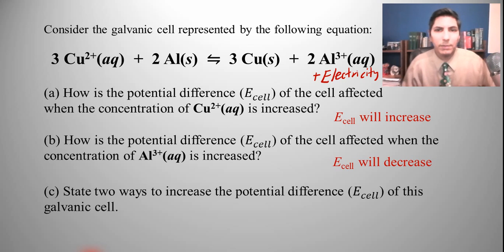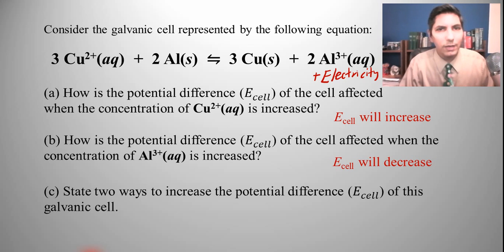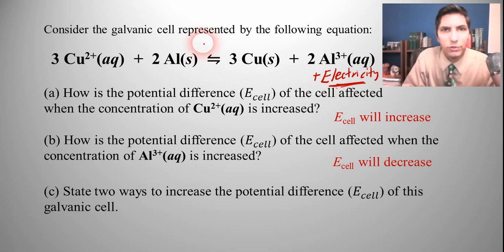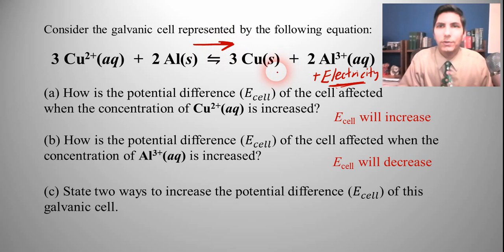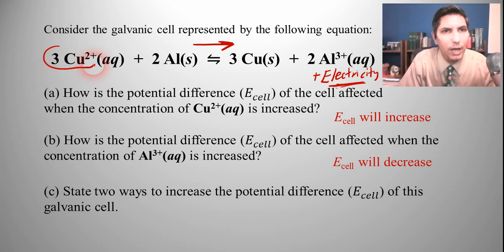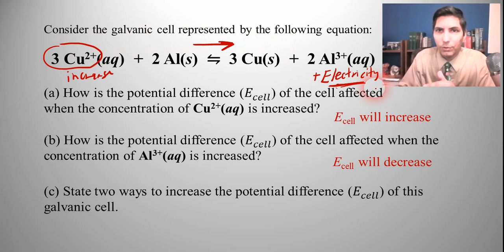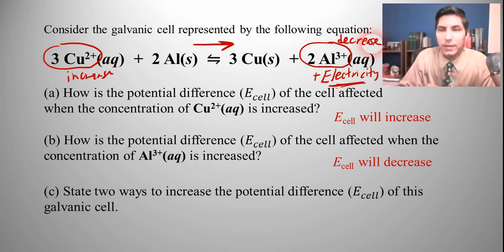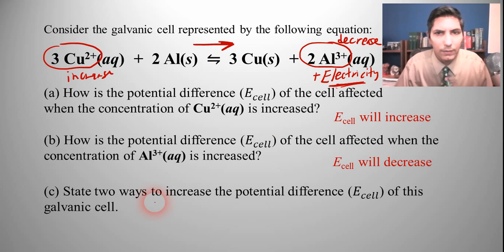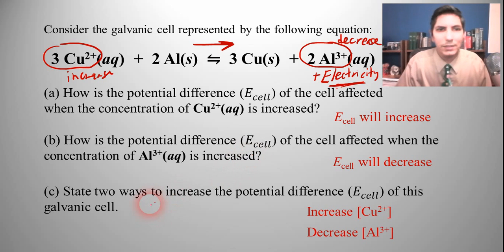If we want to increase the potential difference of this galvanic cell, there are two ways to shift the reaction to the right: first, increase the amount of copper ions — adding a reactant shifts equilibrium right and increases voltage; second, decrease the amount of aluminum ions — removing a product also shifts equilibrium to the right and increases the E cell.